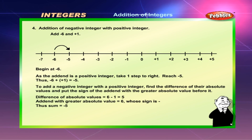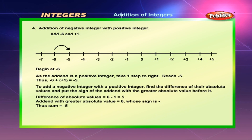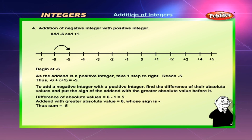Addition of negative integer with positive integer. Add minus 6 and plus 1. Begin at minus 6. As the addend is a positive integer, take one step to the right. Reach minus 5. Thus, minus 6 plus plus 1 is equal to minus 5. To add a negative integer with a positive integer, find the difference of their absolute values and put the sign of the addend with the greater absolute value before it. The difference of absolute values is 6 minus 1, which equals 5. The addend with the greater absolute value is 6, whose sign is minus. Thus, the sum is equal to minus 5.